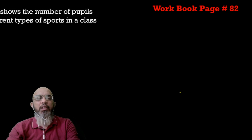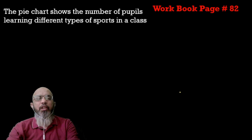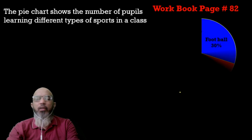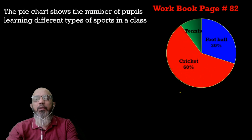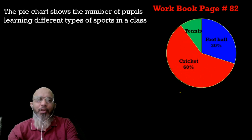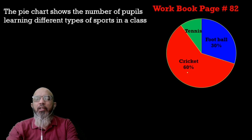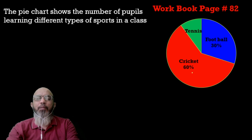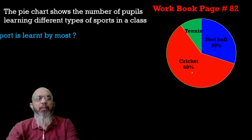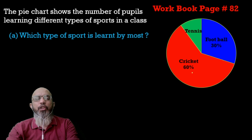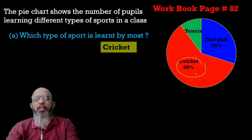Let's move to the next question from your workbook, page 82. The pie chart shows the number of people learning different types of sports in a class. Sixty percent are playing cricket — my favorite sport as well! The first question is: which type of sport is learned by the most people? The answer is cricket.